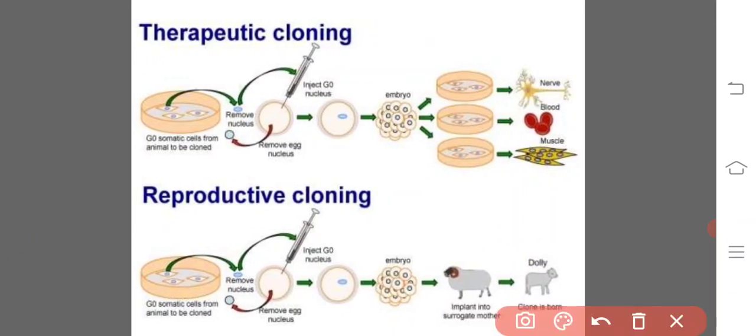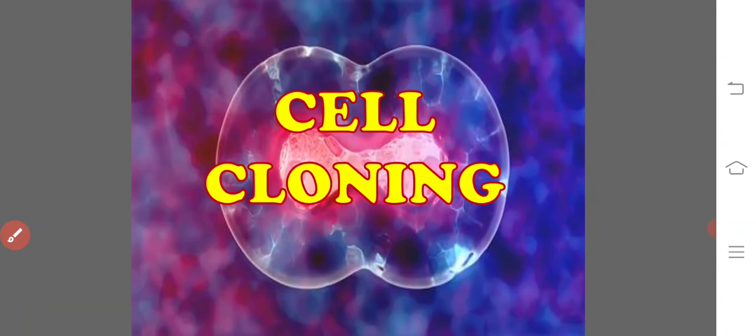In therapeutic cloning, it is the process of production of embryonic stem cells for use in replacing or repairing damaged tissues or organs, achieved by transferring a diploid nucleus from a body cell into an enucleated egg — for therapeutic usage and treatment purposes. Now coming to the methods of cloning: cell cloning, animal cloning, and gene cloning.